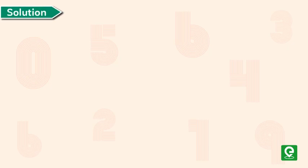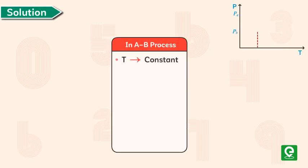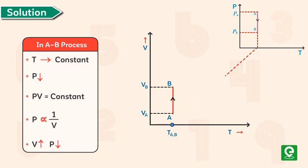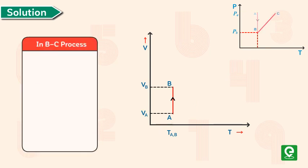Solution: In AB process, the value of temperature is constant while the pressure decreases from A to B. From ideal gas equation, we have P into V is constant, which means P is inversely proportional to V. So for AB process we can say that since pressure decreases, therefore volume increases.